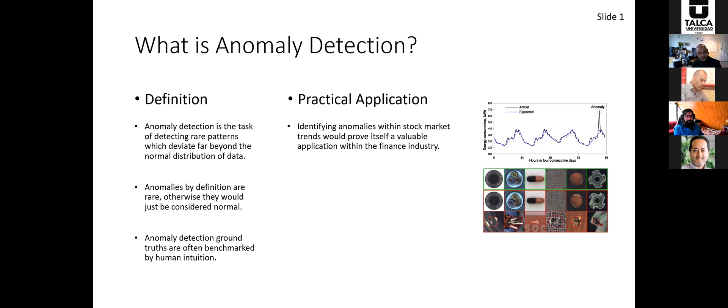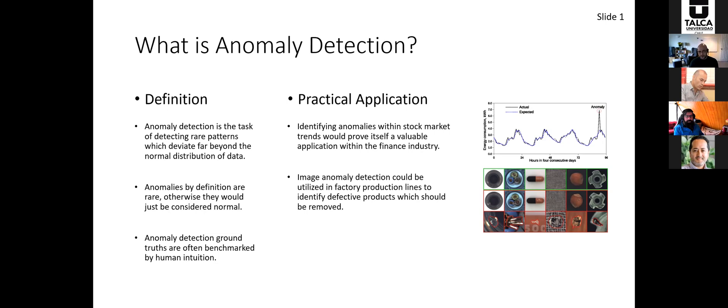If the finance industry was able to predict relevant anomalies in the stock market, they would know where to invest or when to stop investing in a particular industry. There's also a lot of application in image anomaly detection — for example, if you have a factory production line and some products are damaged or defective, you'd want to remove them. Getting a human to inspect each item is very laborious, but a machine that could automatically recognize any form of anomaly without needing it explicitly defined would save any factory a lot of money.